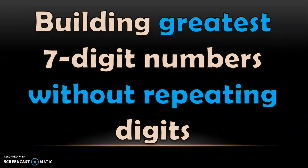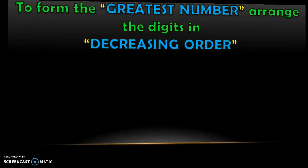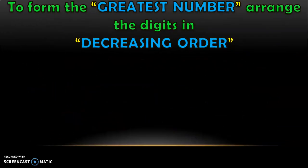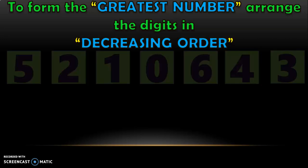We will first be building the greatest 7-digit number without repeating the digits. The rule is: to form the greatest number, arrange the digits in decreasing order — descending order, or from big to small. The key to remember is, to form the biggest number, arrange the digits from big to small.